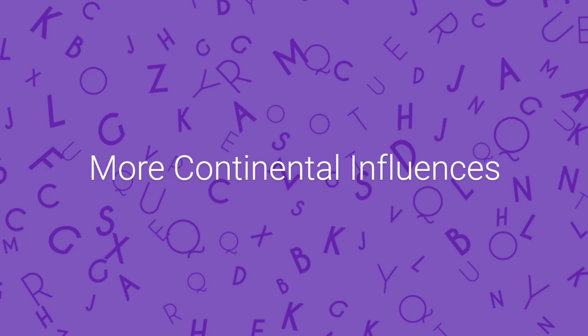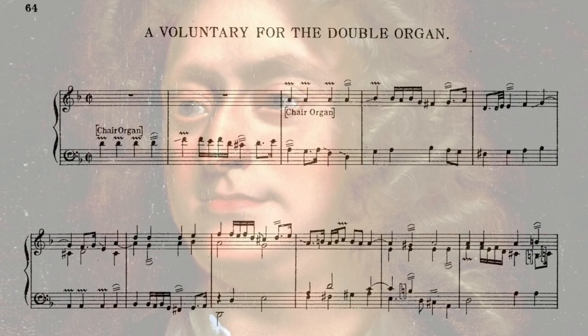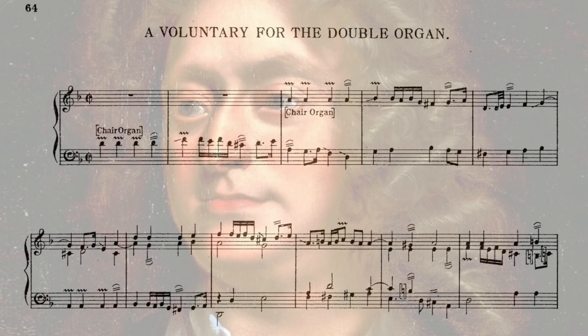It's here that we start to see continental influence again. Organs were now being built with mutations and with reeds, as organ builders who had fled to the continent during the Commonwealth era returned with new ideas. Composers like Frescobaldi and Froberger, and also the French music that Charles II brought back with him from his period in exile, all provided sources of inspiration to English composers. We see French ornamentation in the works of composers like Henry Purcell, and voluntaries written for specific registrations, such as the trumpet or the cornet.